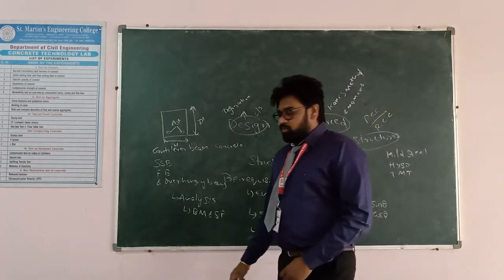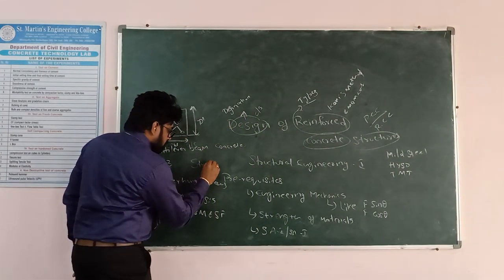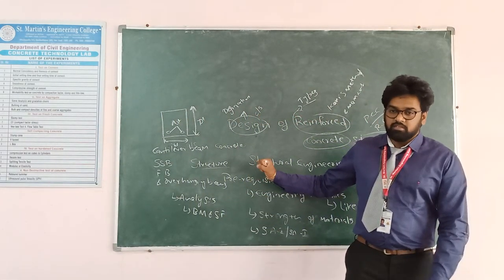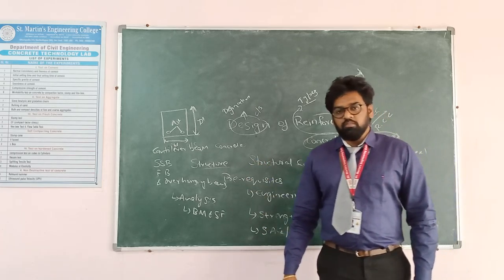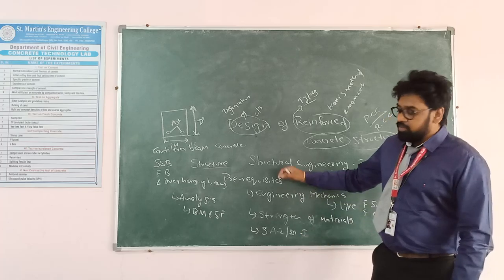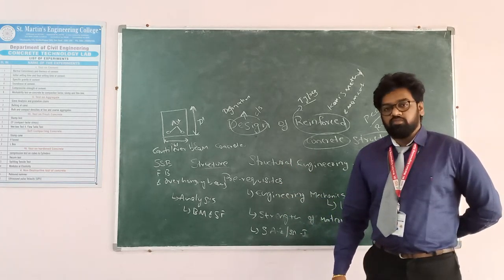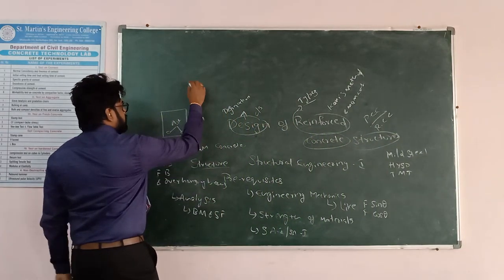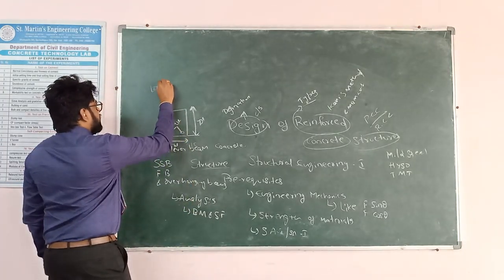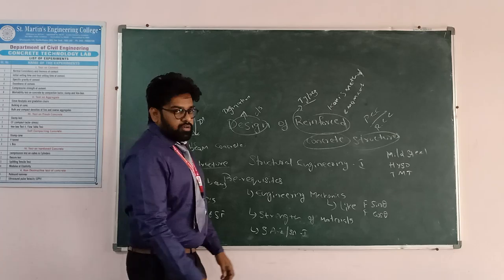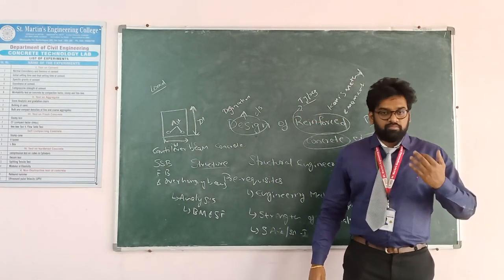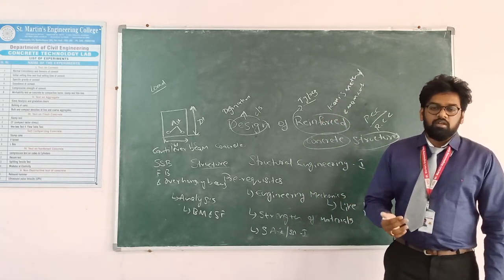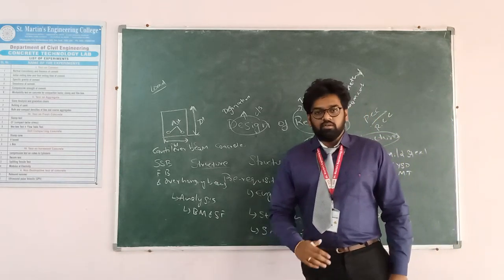So what is a structure? A structure is an assembly of different structural elements. In an RCC structure, the elements are beams, columns, footings, slabs, and staircases. Load can transfer from one member to another. Load transfer always goes from top to bottom: from the slab to beams, beams to columns, columns to footing, and from footing it goes to the ground level.